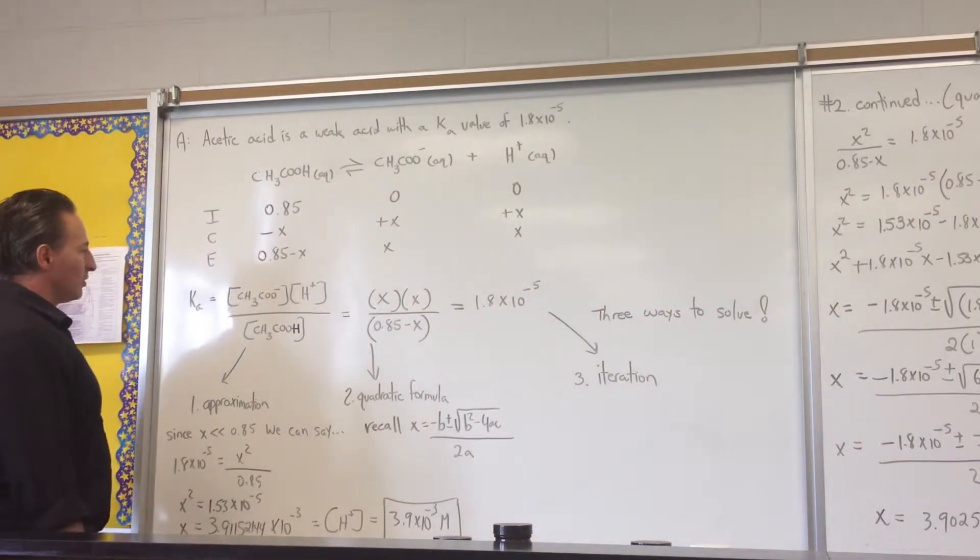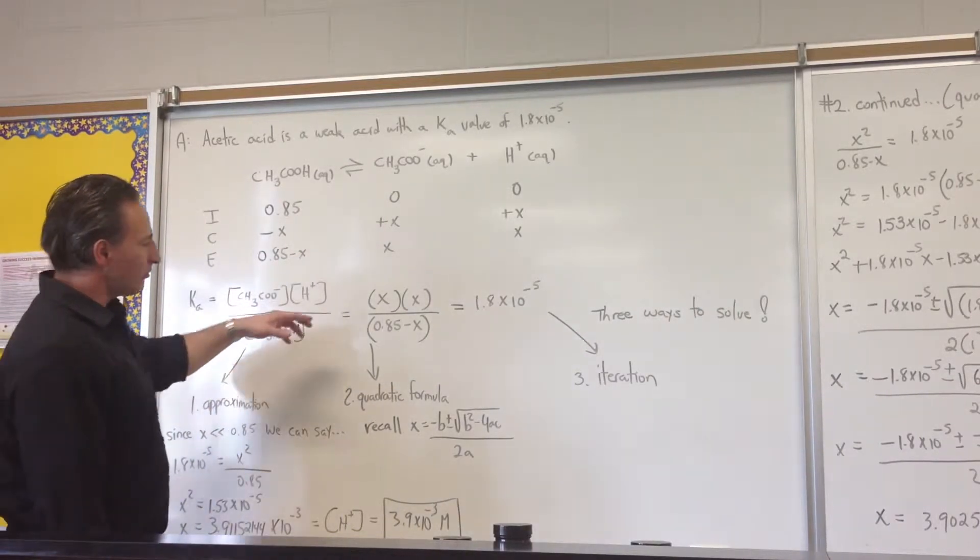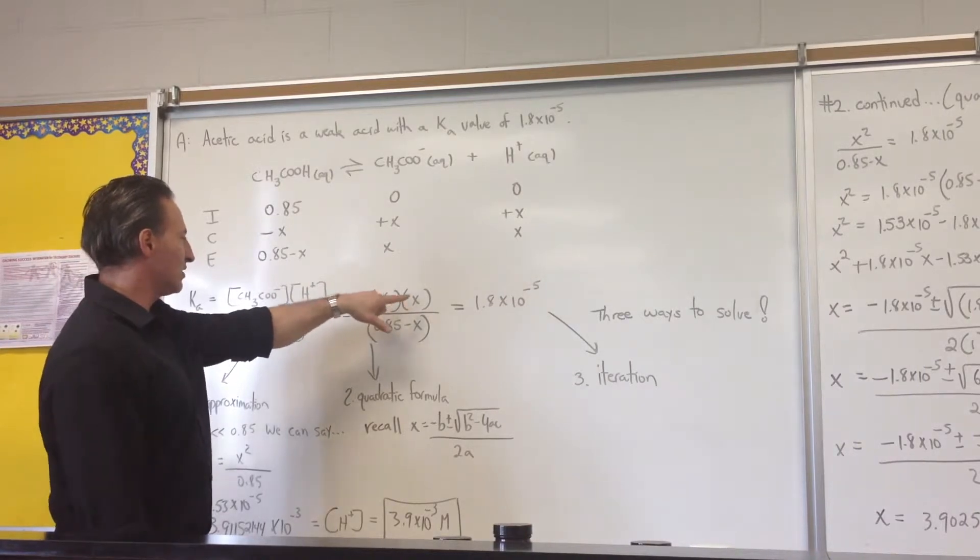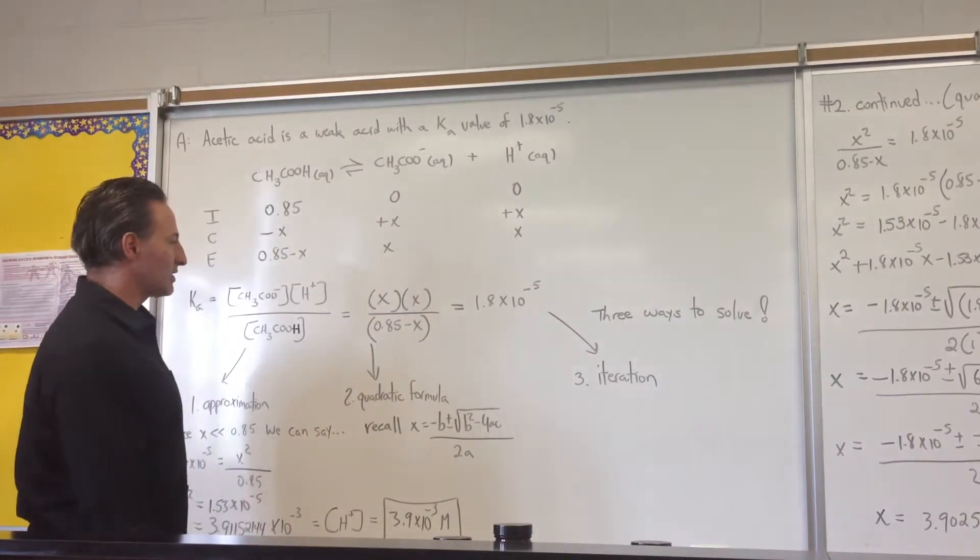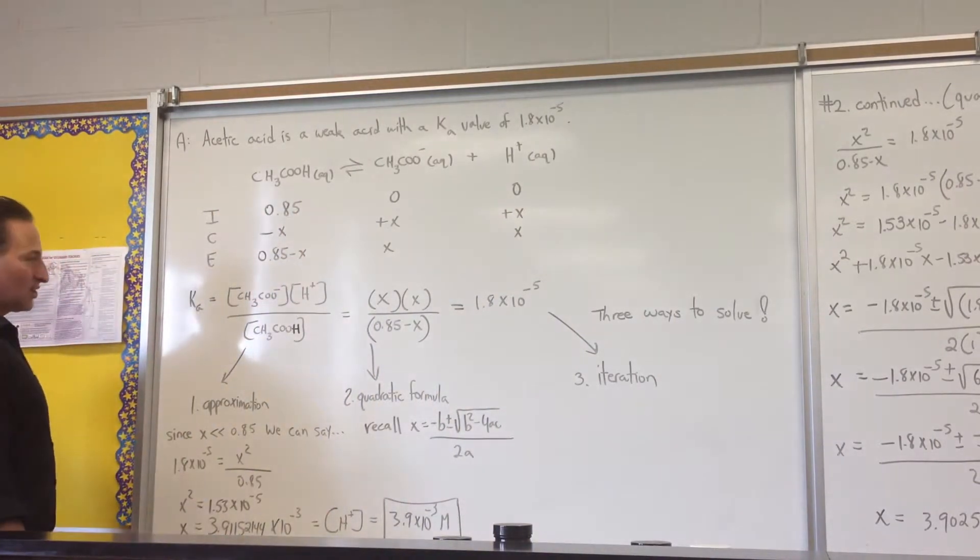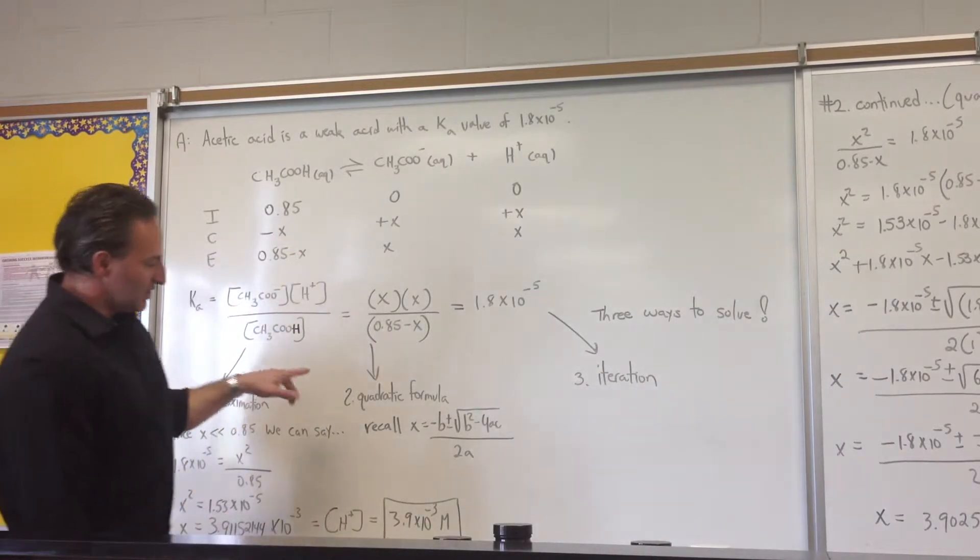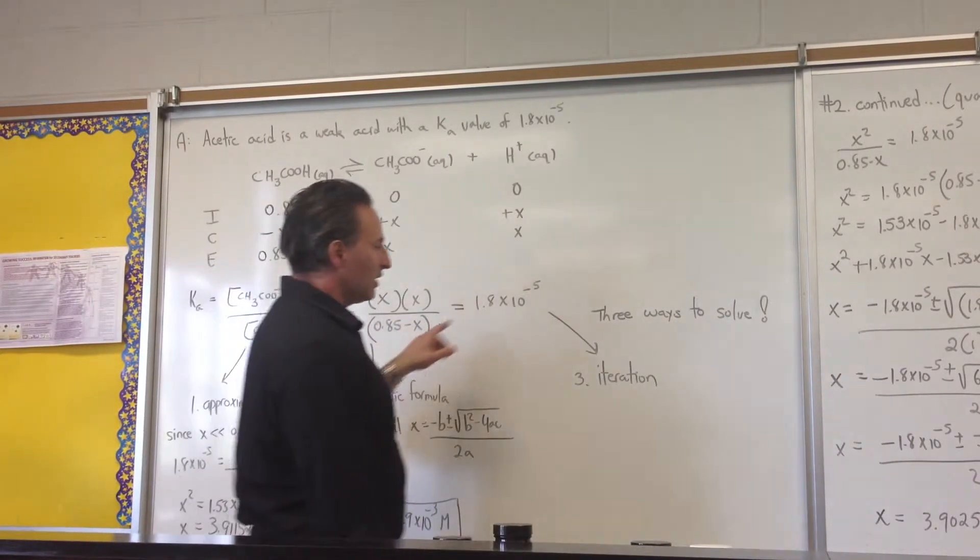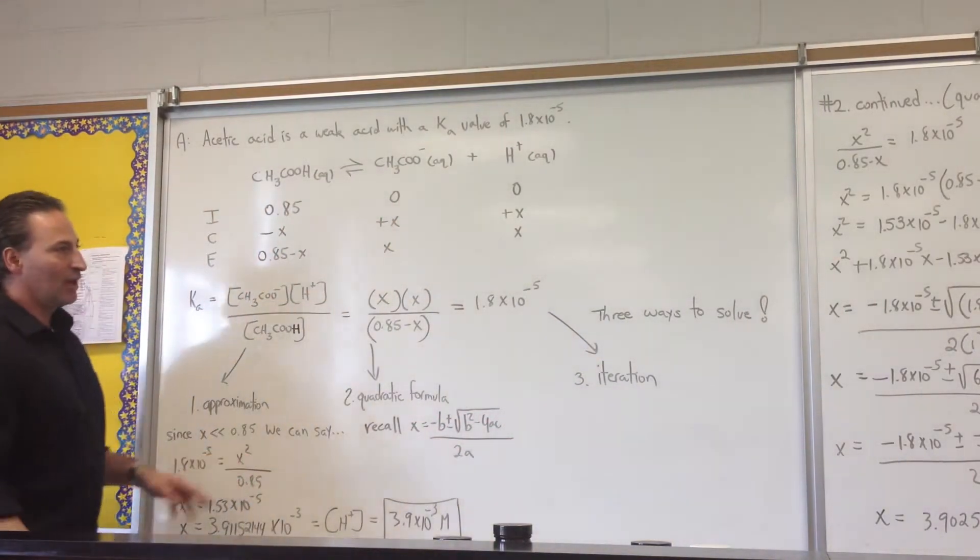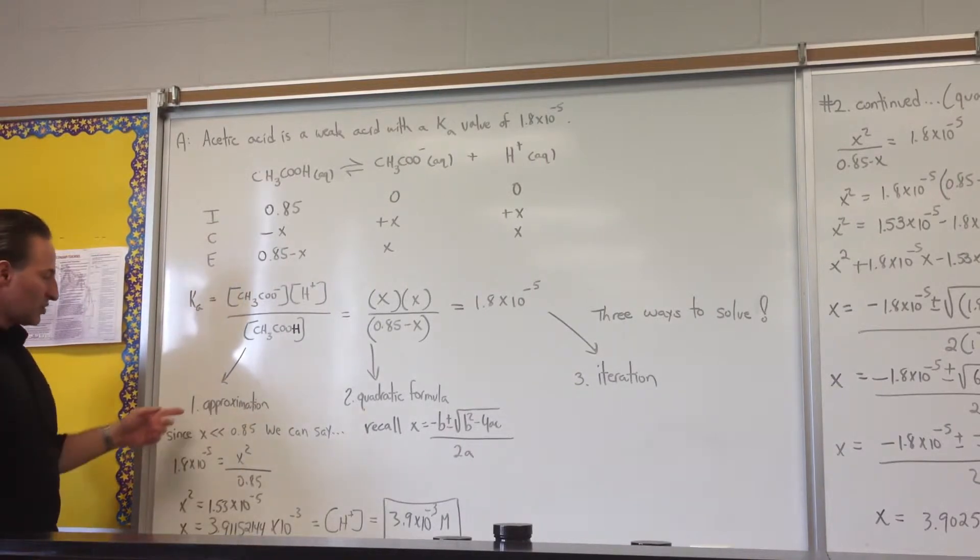When we write the equilibrium equation, products over reactants will be able to substitute all these quantities with X times X over 0.85 minus X. All of that has to equal 1.8 times 10 to the minus 5. There are three ways to solve these equations: one is by approximation, the second method is by the quadratic formula, and the third way is by iteration. All three should give very similar answers, sometimes even identical answers.